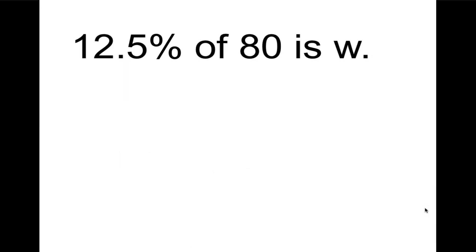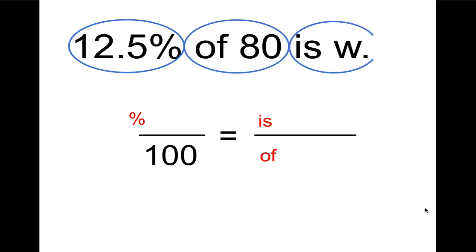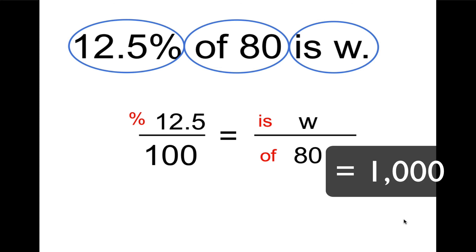Why don't you go ahead and try this one on your own, and we'll check back in a moment. Okay, in this case, we have percent over 100, part over whole, 12.5%. The whole is 80, and again, the missing piece is the part. So plugging in the numbers, 12.5 and the whole is 80. So we're going to multiply 12.5 times 80, which equals 1,000, and then 1,000 divided by 100 equals 10.